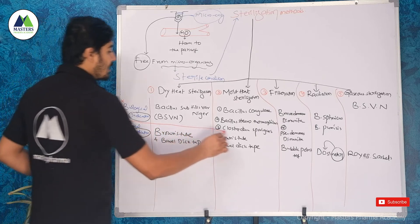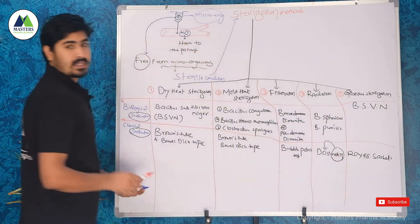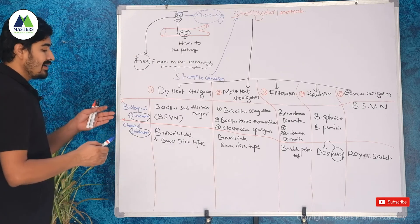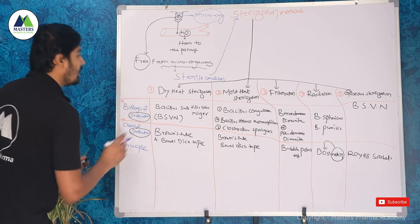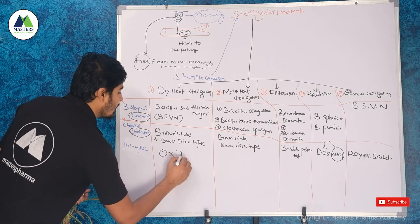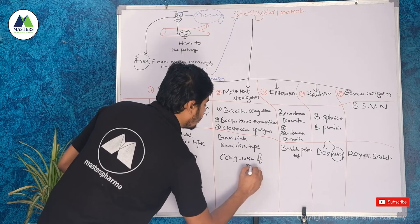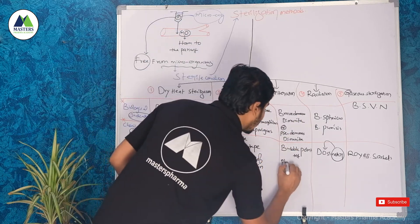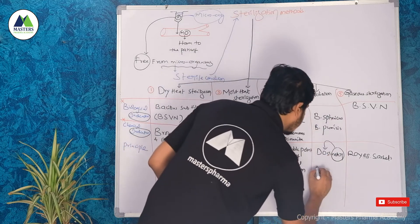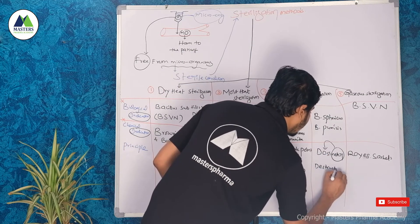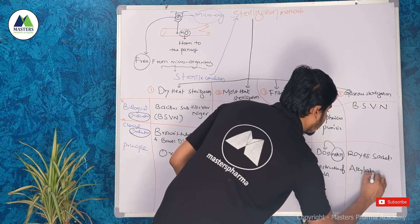Biological indicators and chemical indicators are used to determine the efficiency of the sterilization method. In the examination, they also ask about the principle of each method. The principle of dry heat sterilization is oxidation. Moist heat sterilization: coagulation of protein. Filtration: physical separation. Radiation: destruction of DNA. Gaseous sterilization: alkylation.